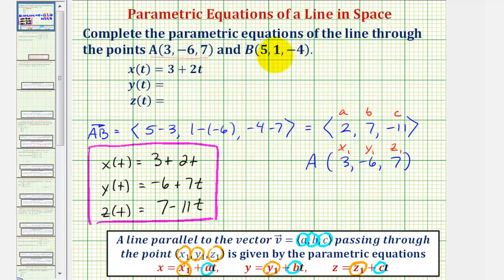Notice how if we used point B, the equations would look different but would give us the same line. We can also use any scalar multiple of the direction vector here, which would change the values of a, b, and c, but still give us the same line.